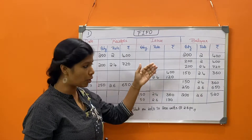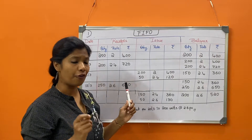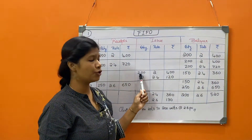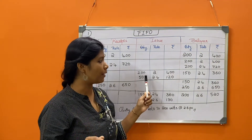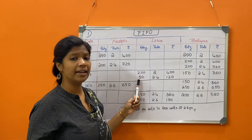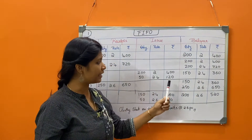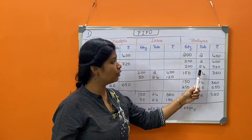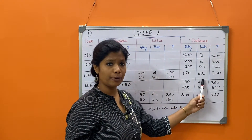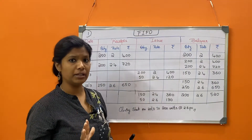From the second batch, we issue the remaining 50 units at rupees 2.4, so 50 × 2.4 = 120 rupees. The balance as on 15th March is 150 units: the first batch is completely issued, so from the second batch of 200, we issued 50, leaving 200 minus 50 = 150 units at rate 2.4, value 360 rupees.